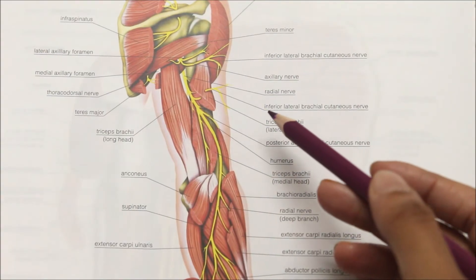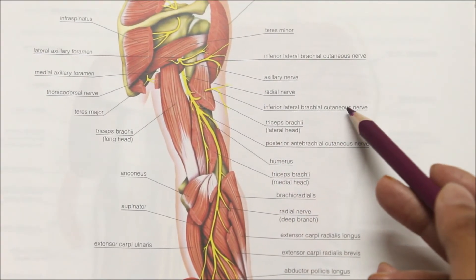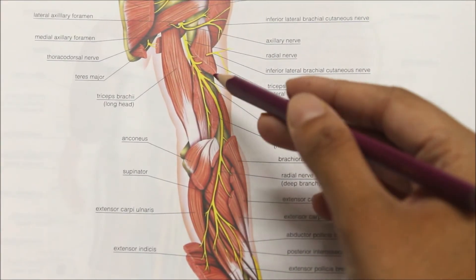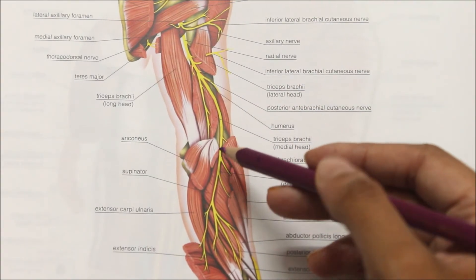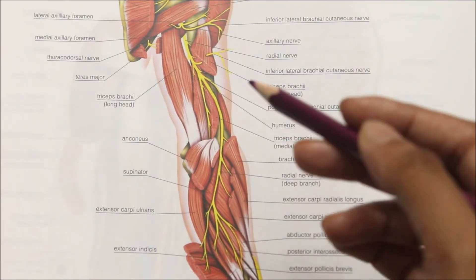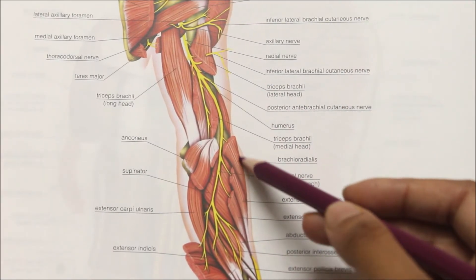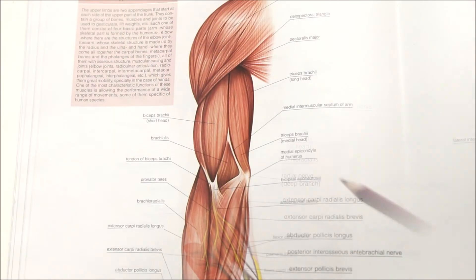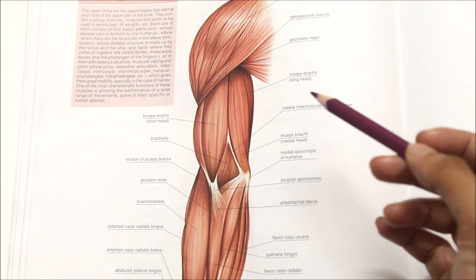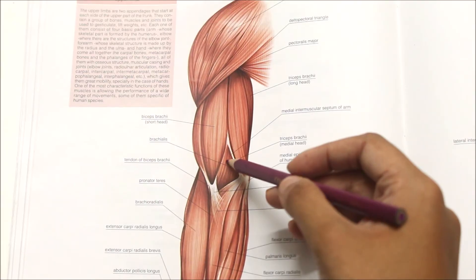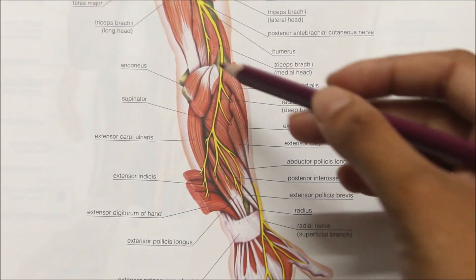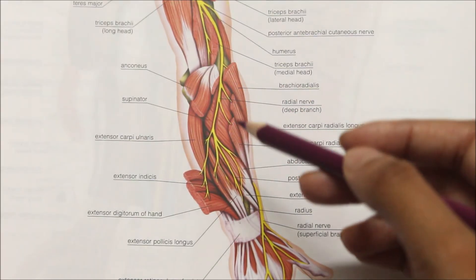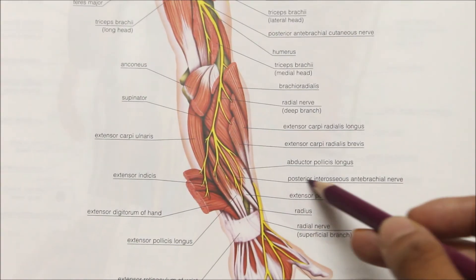The cutaneous branches in the spiral groove include the lower lateral cutaneous nerve of the arm and the posterior cutaneous nerve of the forearm. At the cubital fossa, the radial nerve gives proprioceptive supply to the brachialis muscle and motor fibers to the brachioradialis muscle as well as the extensor carpi radialis longus muscle. In the forearm, all the muscles of the posterior compartment are supplied by the deep branch of the radial nerve, that is the posterior interosseous nerve.